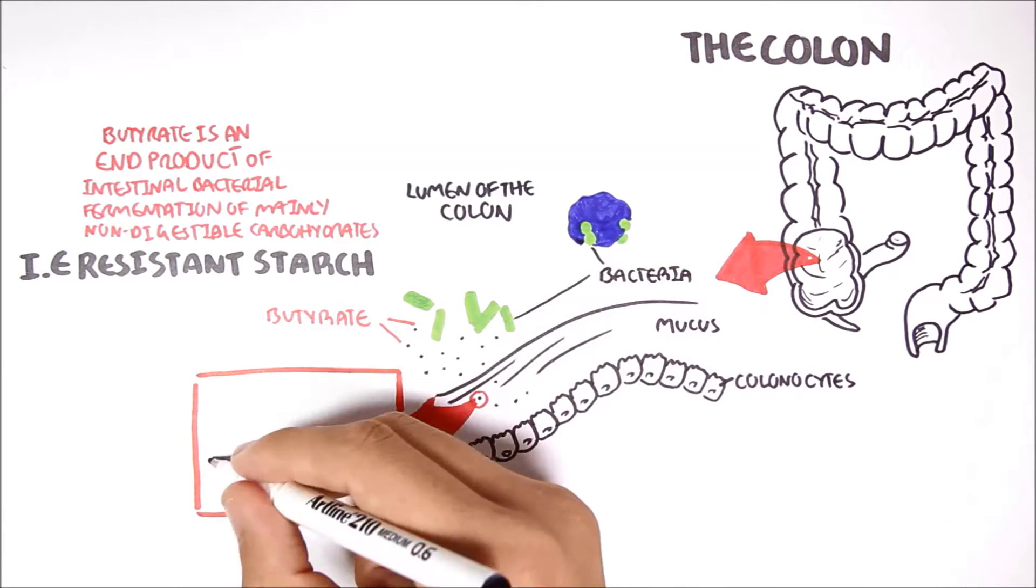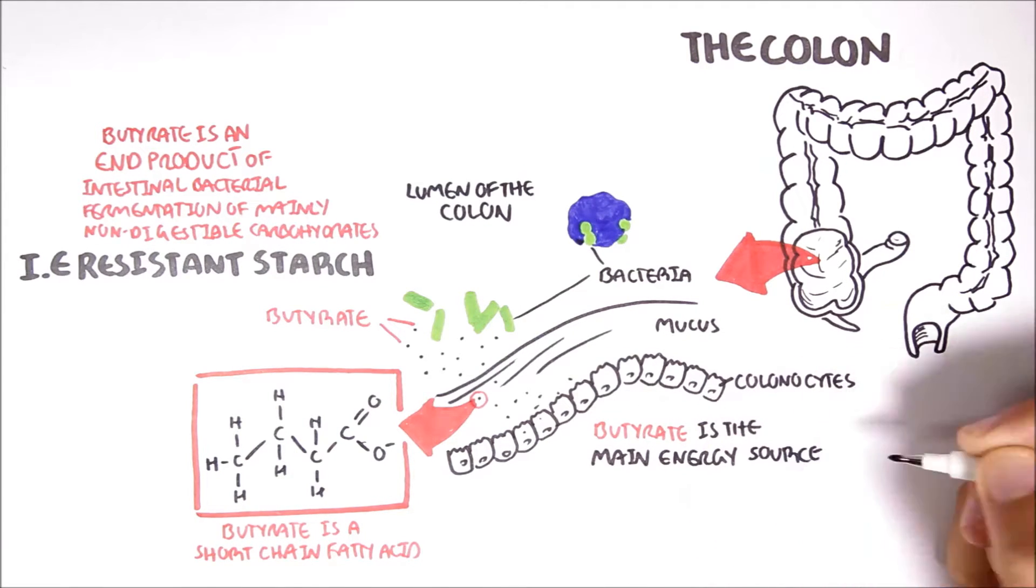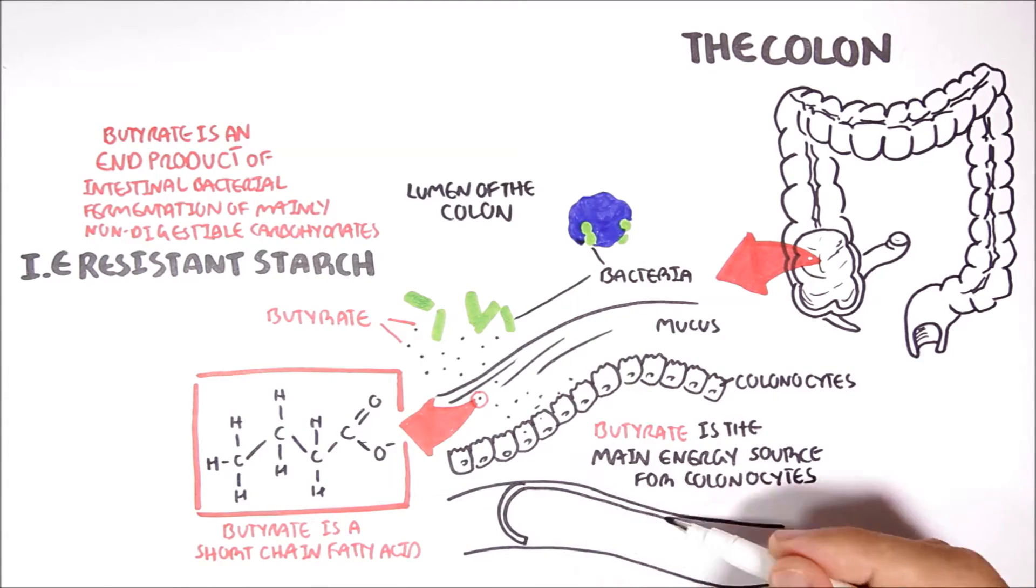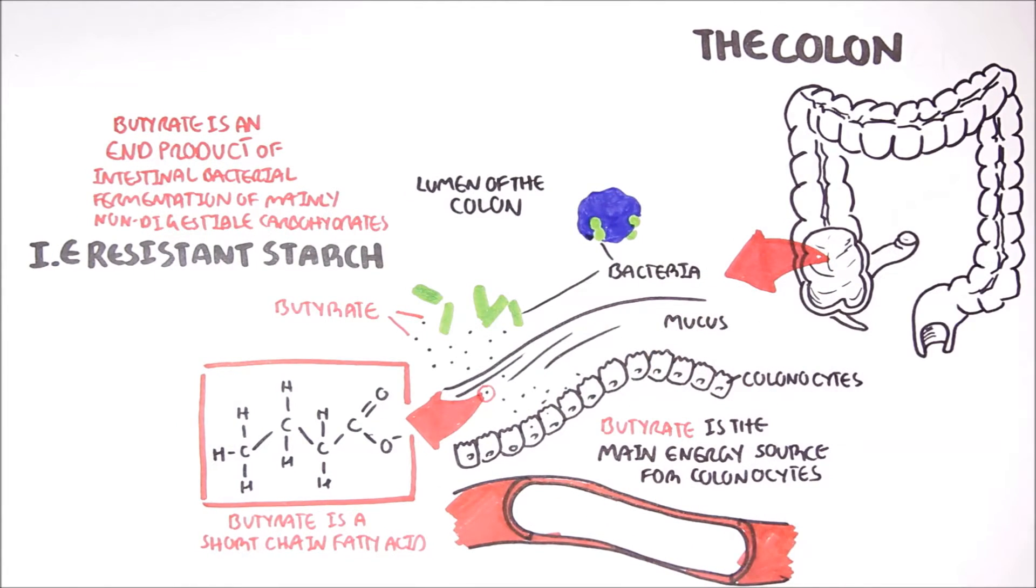Butyrate is a 4-carbon short-chain fatty acid. Butyrate is absorbed by the colon cells and is the main source of energy for these colon cells. Therefore, there are lower concentrations of butyrate that enter the bloodstream compared to other short-chain fatty acids, such as acetate and propionate.